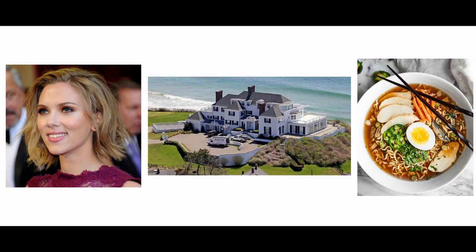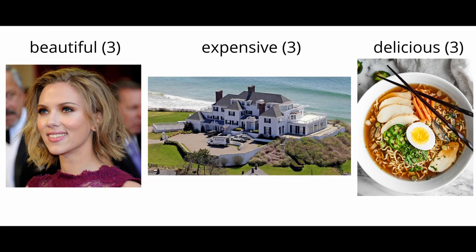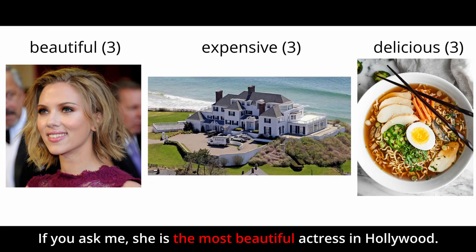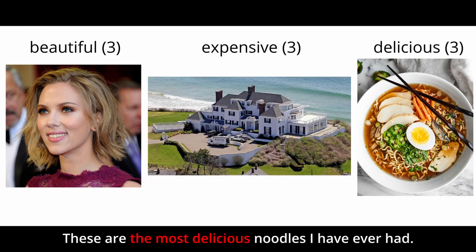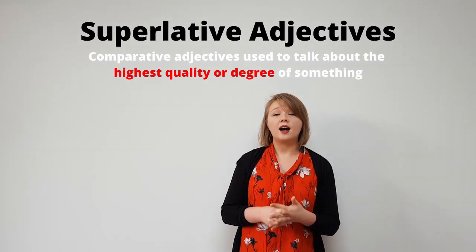Let's take a look at another example. Here we see a famous actress, a huge house, and some great food. Let's put up some adjectives to describe each: beautiful, expensive, delicious. Beautiful, expensive, and delicious have three syllables, so we will use the most in our sentences. If you ask me, she is the most beautiful actress in Hollywood. This is the most expensive house in the city. These are the most delicious noodles I have ever had. We use superlatives to talk about when something is the highest quality or degree of something.